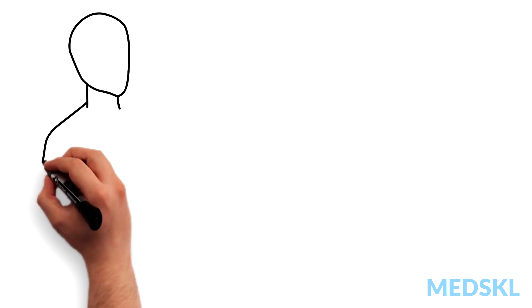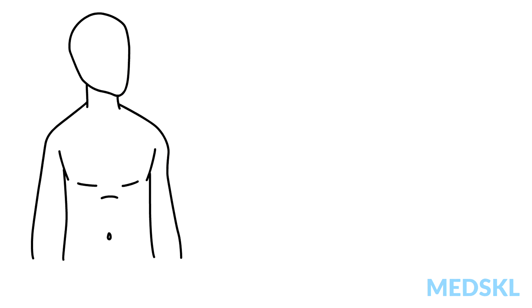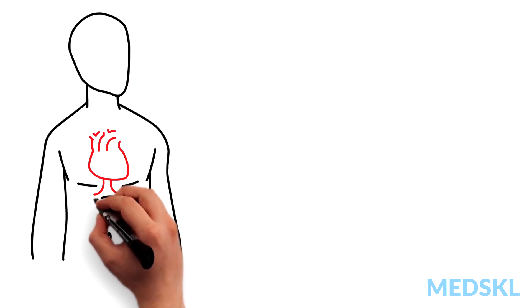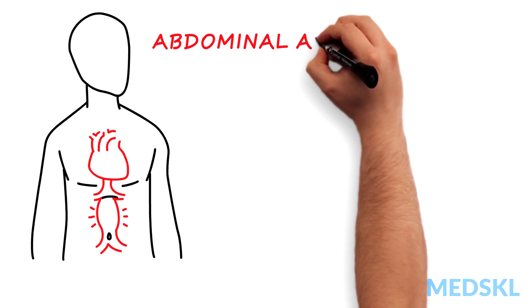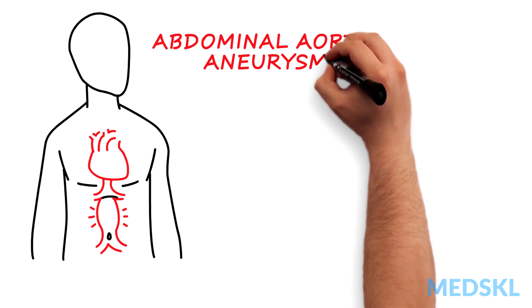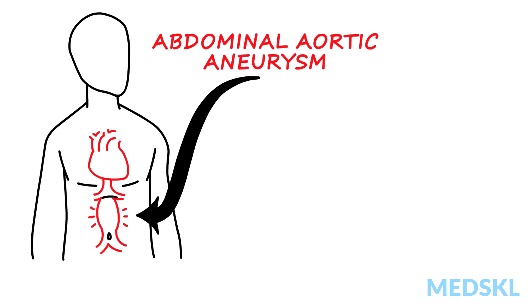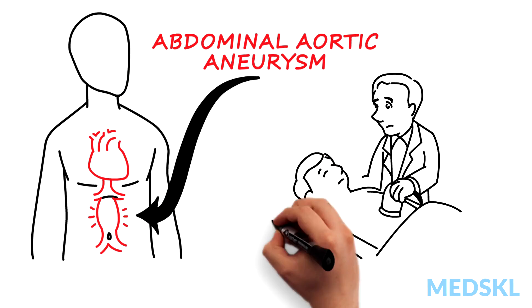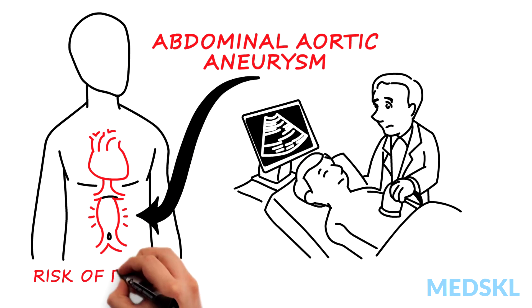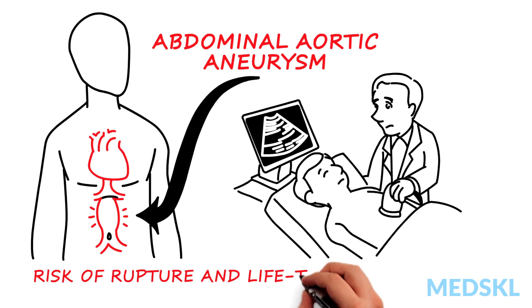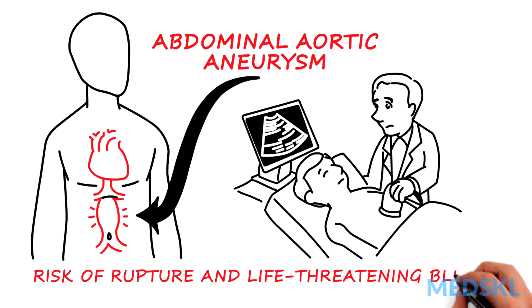A midline, expansile, and pulsatile mass should have you thinking about an abdominal aortic aneurysm. Investigate using an ultrasound, as these have a risk of rupturing and causing life-threatening bleeds.